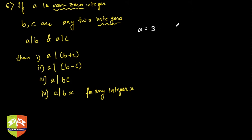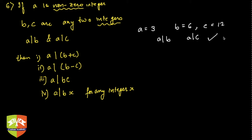Let's take an example: let a equal 3, b equal 6, and c equal 12. Clearly a divides b since 3 divides 6, and a divides c since 3 times 4 is 12. Now let's check: b plus c equals 6 plus 12, which is 18, and clearly a divides b plus c — property one is validated.